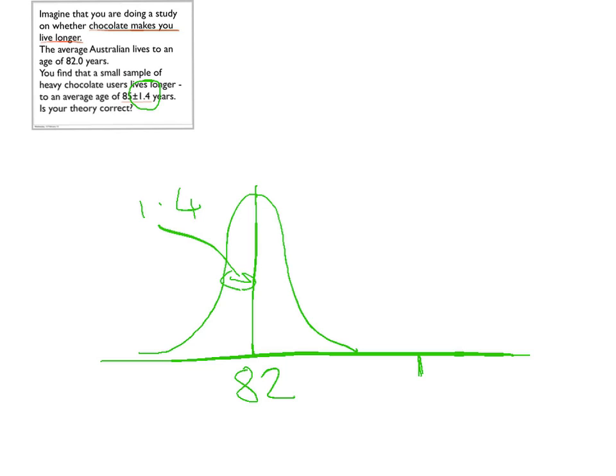Now this seems a bit odd. We actually measured 85 plus or minus 1.4, but I've drawn a Gaussian curve around the value of 82. What we are assuming is the uncertainty is independent of the value. So whatever the value is, you'd have an uncertainty of 1.4, and what we're doing now is not looking at our data, but the null hypothesis. The null hypothesis is just that in fact there's no difference, and we're assuming that the uncertainty is the same.